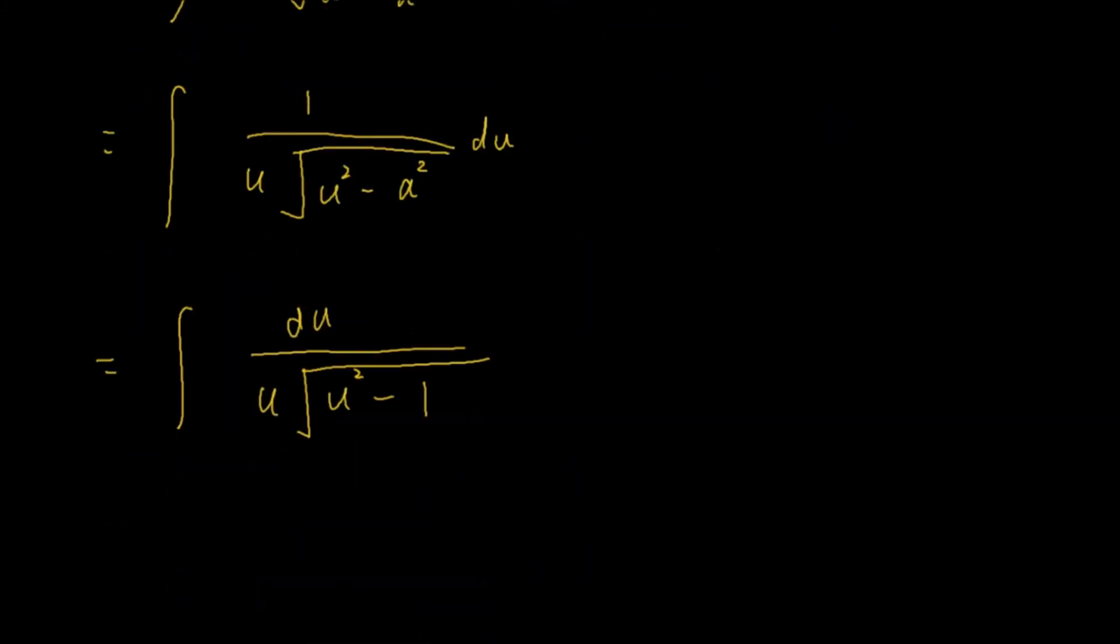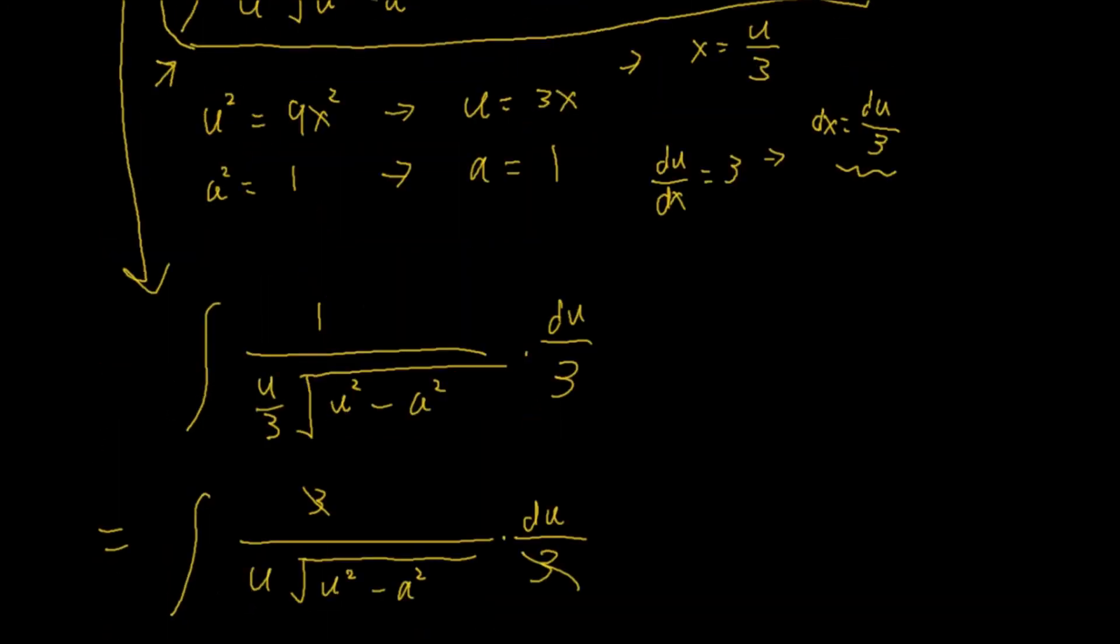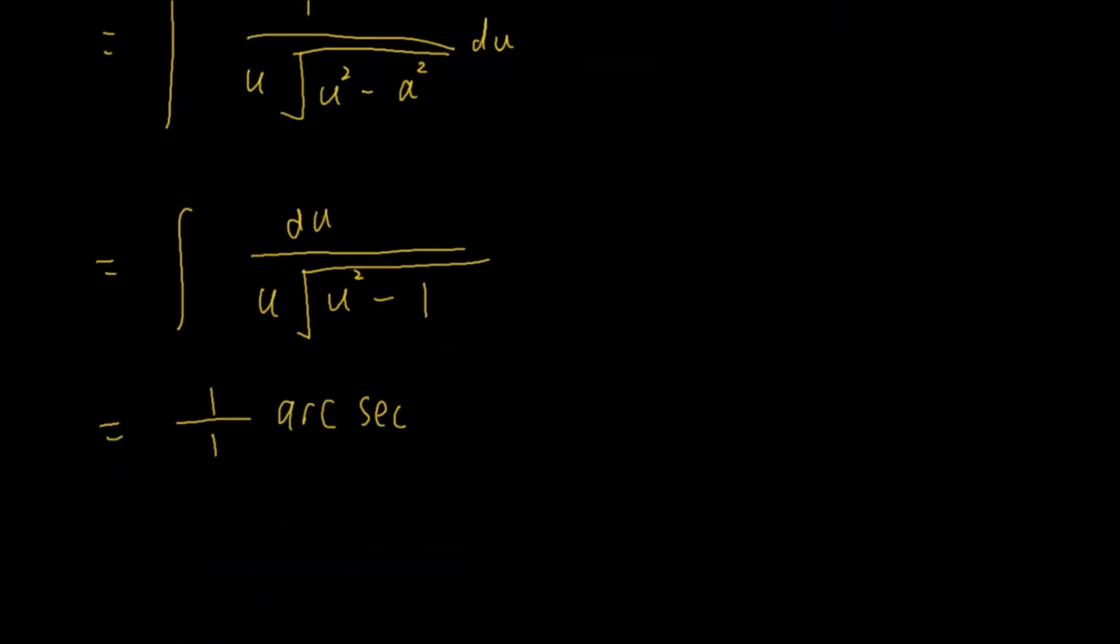So, we know that this is equal to 1 over a, but a is just 1. So, arc secant absolute value of u, what do we say u equal to? u is 3x, here. So, arc secant absolute value of 3x, divided by a, a is 1. Now, we're done. That is the same as 1 over 1 is just 1, 1 times whatever is whatever. So, arc secant absolute value of 3x, plus c. And we are done.